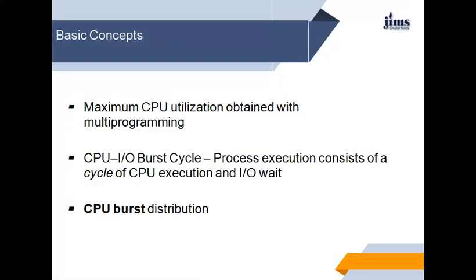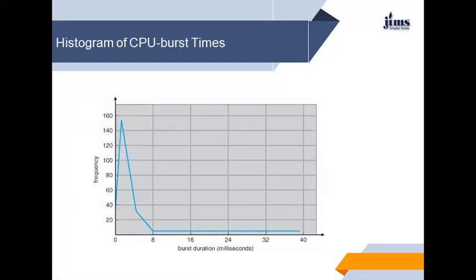All processes alternate between two states in a continuing cycle. One is called CPU burst and another is called input-output burst. CPU burst involves performing calculations, and an input-output burst involves waiting for data transfer in or out of the system.